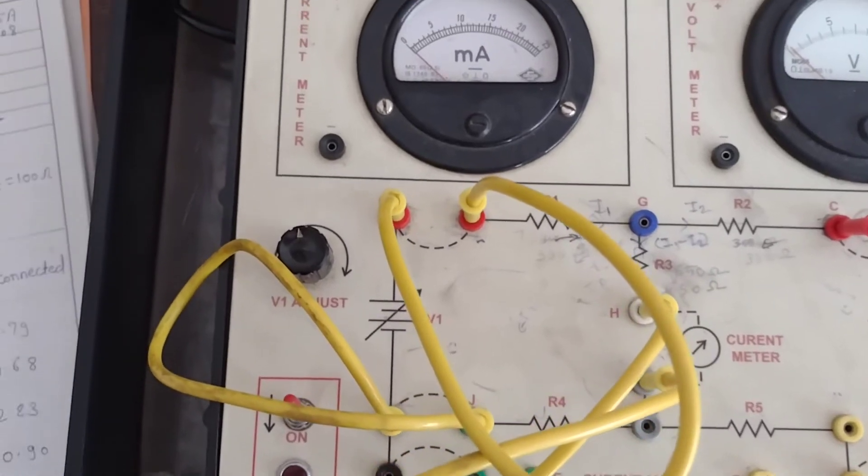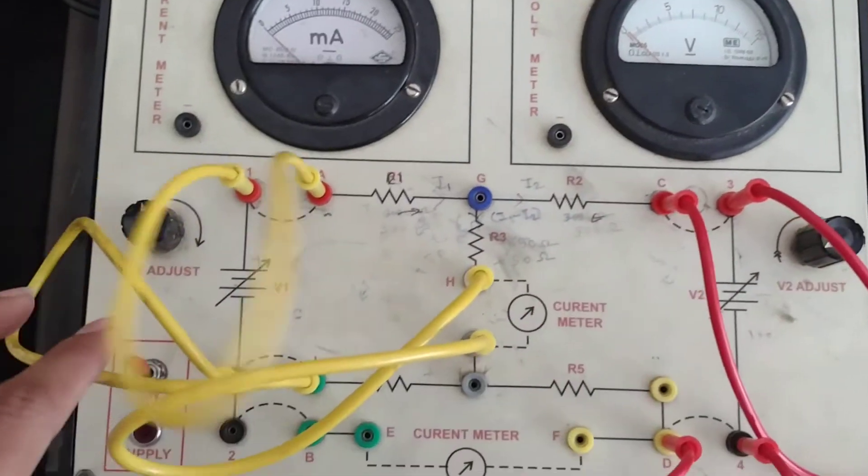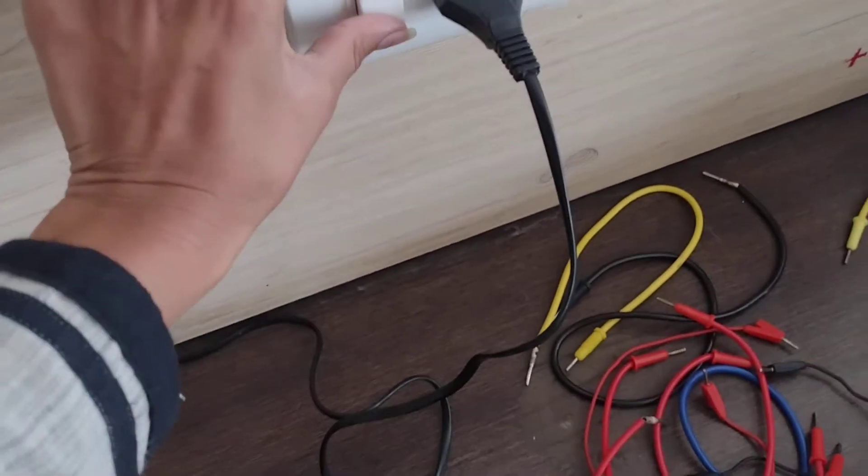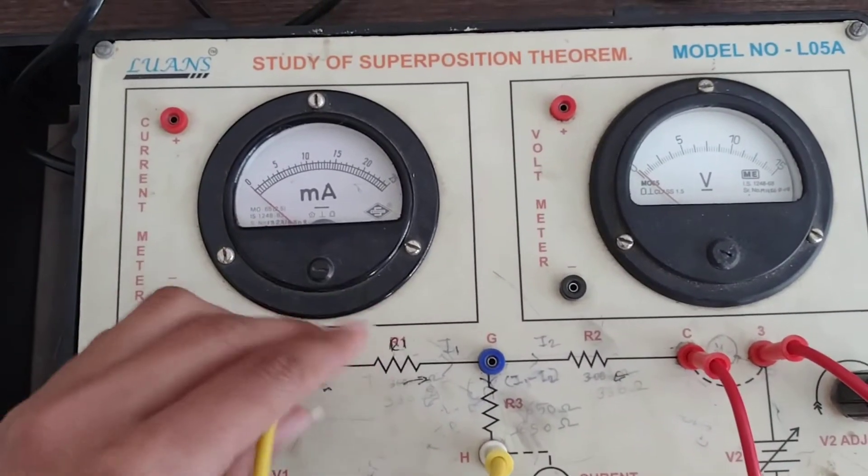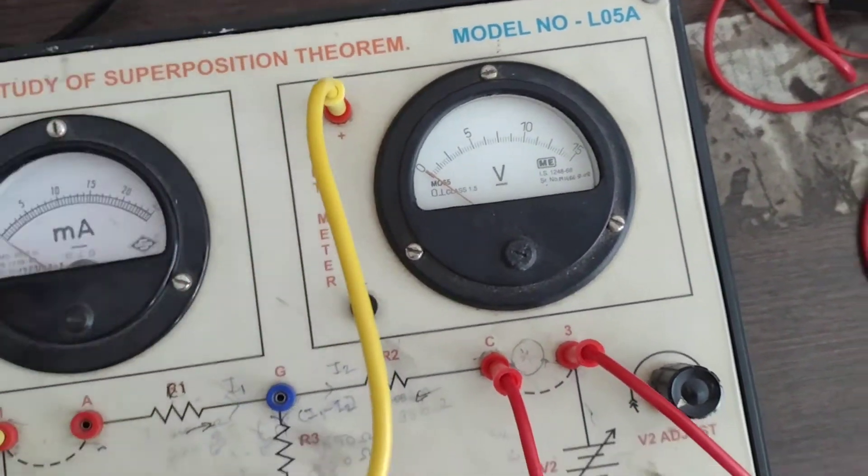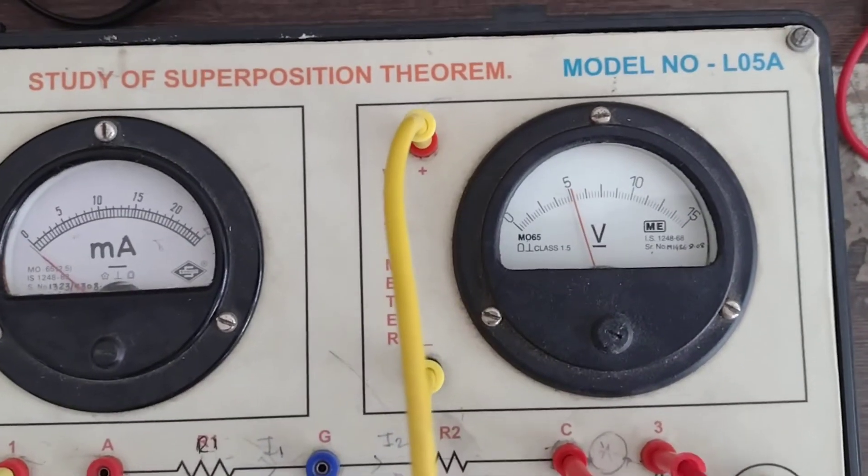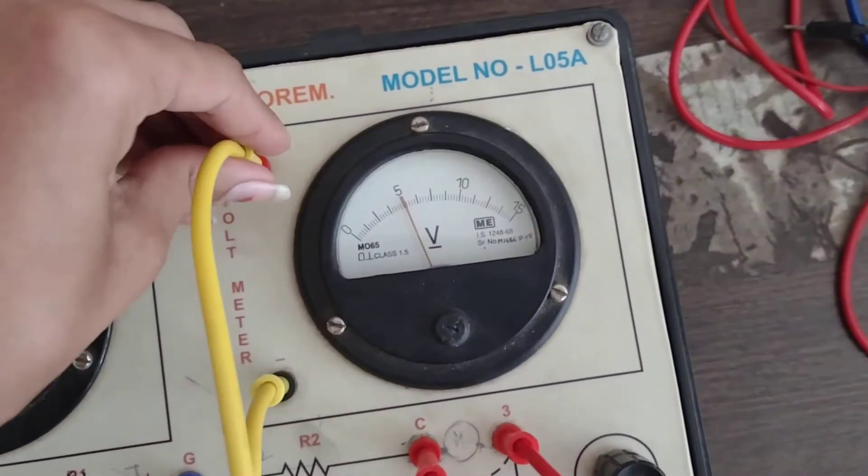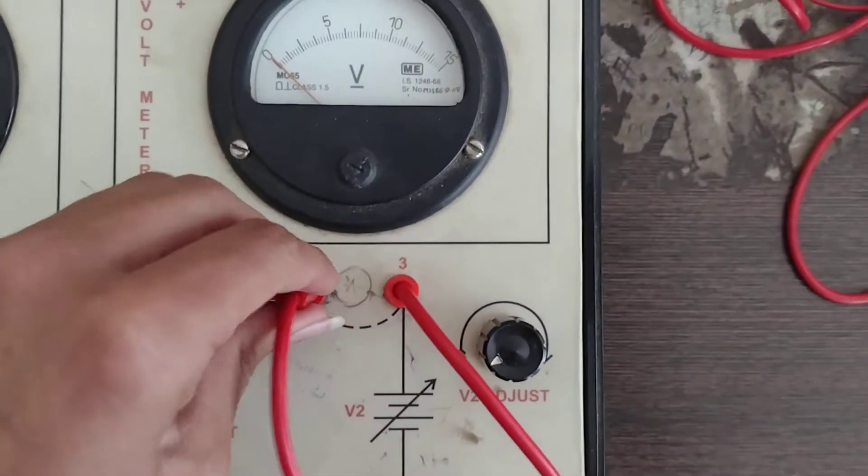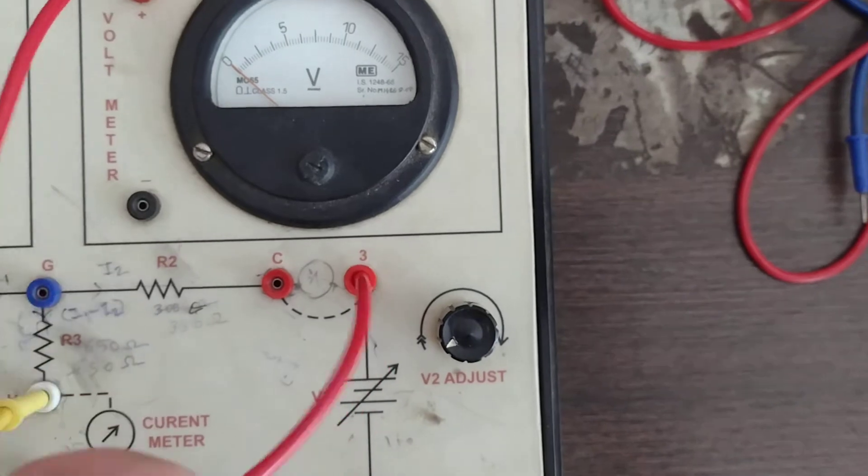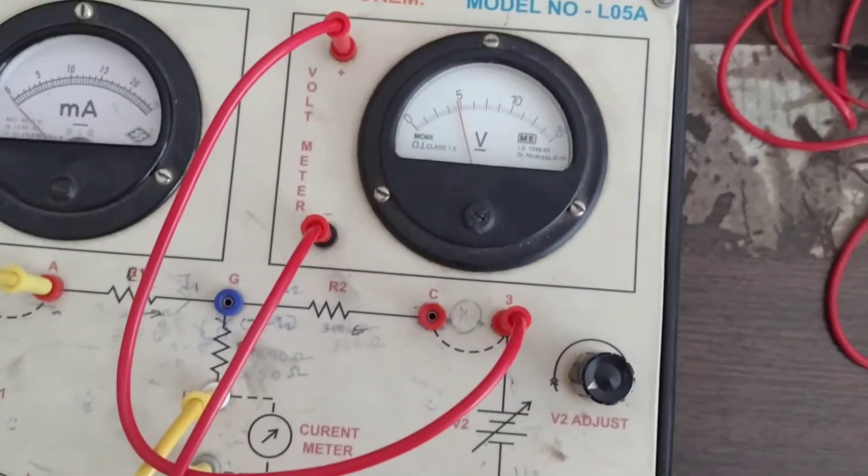First, what are we going to do? We need both voltage sources connected, then we will turn on the supply. We adjust V2 to 5 volts as well.